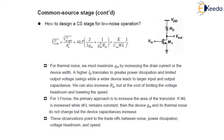These observations point to a trade-off between different factors: noise, power dissipation, voltage headroom, and speed. While designing a common source stage for low noise operation, where we maximize GM, we have to increase the drain current — but increasing drain current also increases power dissipation, which in turn limits the output voltage swing. For flicker noise, we should increase the W·L product without increasing the ratio, which will increase the device capacitance.